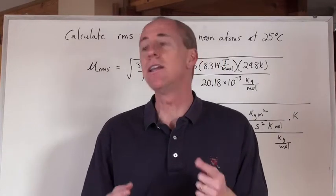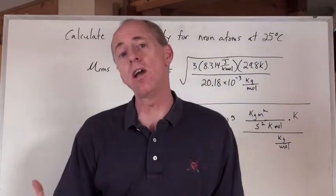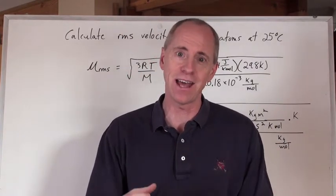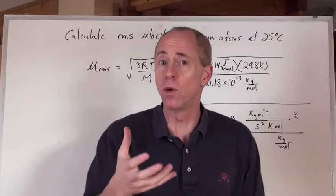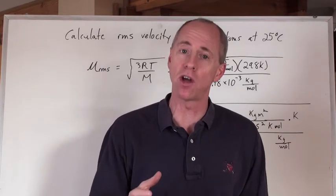So here's a nice little question. Calculate the root mean square velocity for a sample of neon atoms at 25 degrees Celsius. You've got neon in a little bag or something like that, in a balloon, in a tube. So what you're going to do is you're going to calculate what the average speed of those particles are.